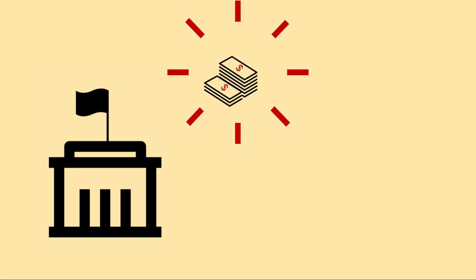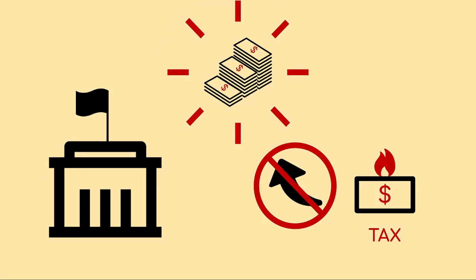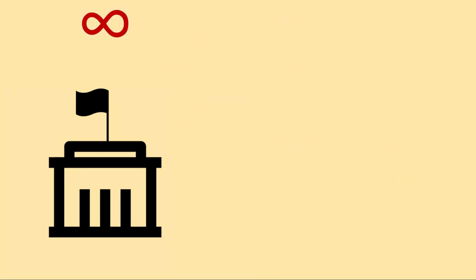The money doesn't come from another account — it is created new at that moment. A government that has its own currency can create money whenever it wants, in whatever amount it wants. Taxes are not used to collect money to be used for spending, as we are so often told. They serve very different purposes. The government can never run out of money.